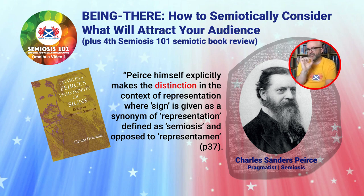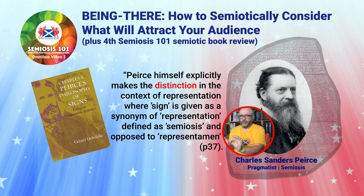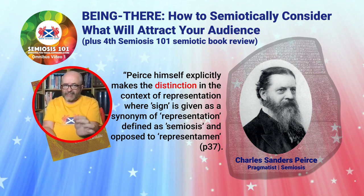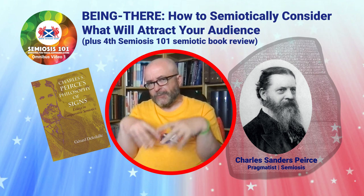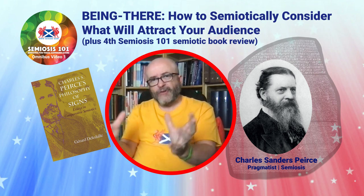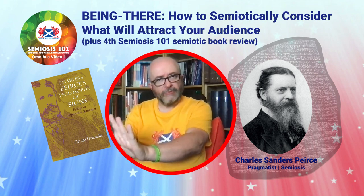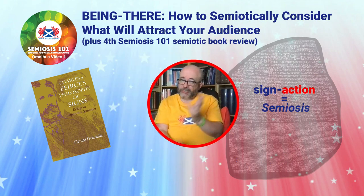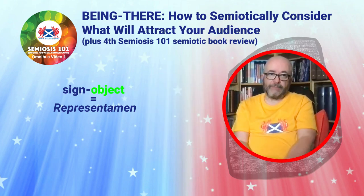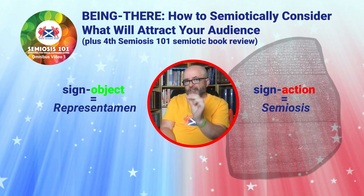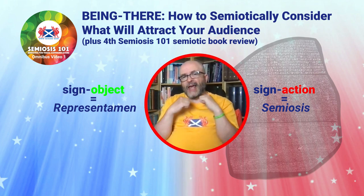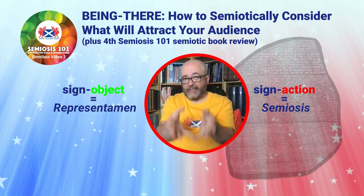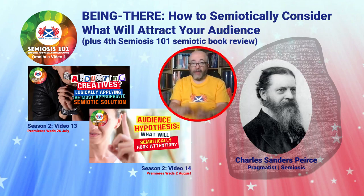Deledalle states Peirce himself explicitly makes the distinction in the context of representation where sign is given as a synonym of representation, defined as semiosis, and as opposed to representament. Let us not get sidetracked into a semantics argument over representation — Semiosis 101's remit is to put Peirce into designer-centric language for the 21st century. Peirce uses sign for both sign-action semiosis and sign-object representament. Therefore Peirce uses representation as a synonym for the semiotic action of a sign, whereas I use representation as an outlook for representing the concept — Peirce's sign-object. Same word, different uses.